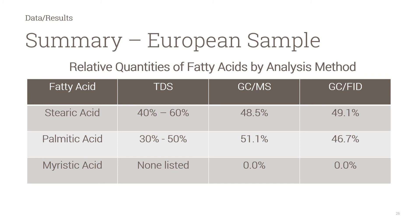Similar to the U.S. sample, this is a summary of the data from the European sample. I have also included specifications from the European technical data sheet. GC-MS and GC-FID results are consistent for stearic and myristic acids, but differ slightly relative to palmitic acid. As with the U.S. sample, the data falls within the amounts of stearic, palmitic, and myristic acids listed on the technical data sheet for the European sample.